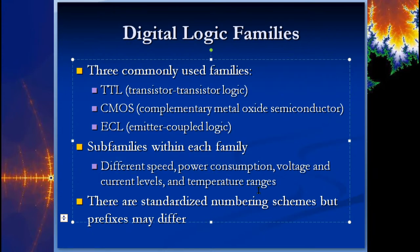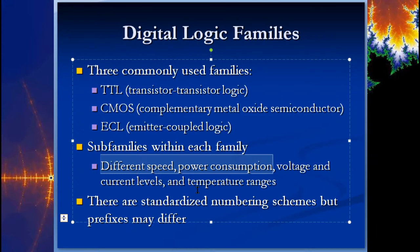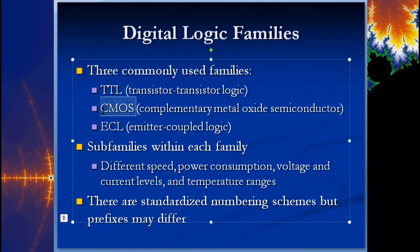For something like a kids' toy that just blinks lights and makes noise, you're not going to worry about speed or power. There are standardized numbering schemes, though prefixes may differ. TTL chips are mostly the 7400 series — so you could have a 7402 or 7408. CMOS chips are typically in the 4000 series, so you could have a 4001.